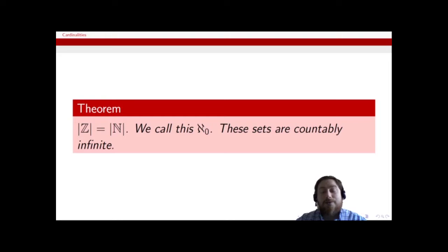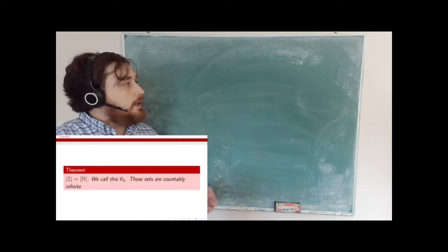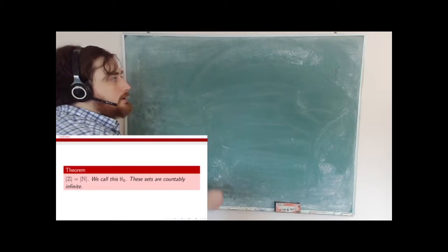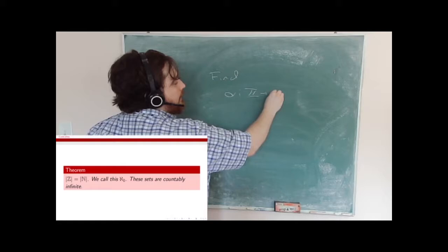The first one we're going to look at is showing that the size of the integers is actually the size of the natural numbers. This size we're going to call aleph-not, which is the smallest infinite cardinality. So if I want to show that the cardinality of the set of integers is the same as the cardinality of the set of natural numbers, what I have to do is find a bijective mapping from Z to N or N to Z — a mapping alpha from Z to N which is one-to-one and onto.